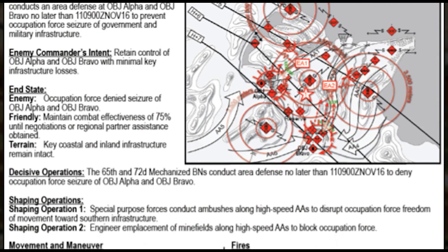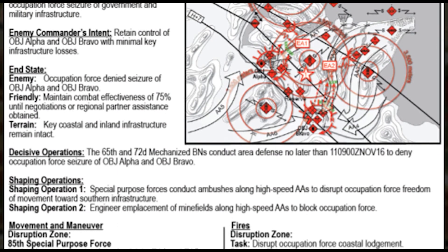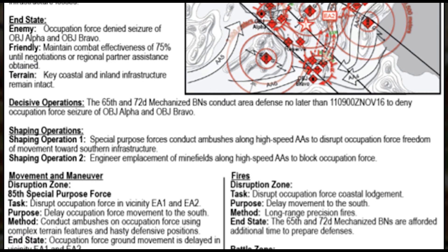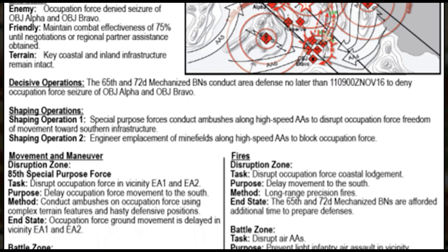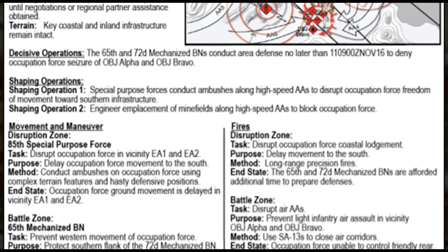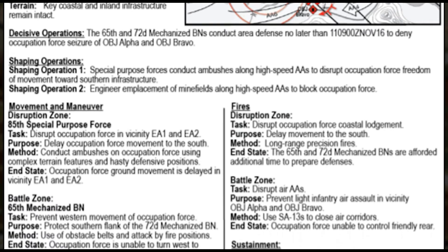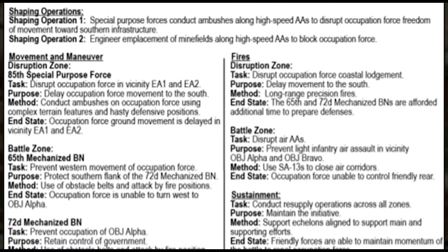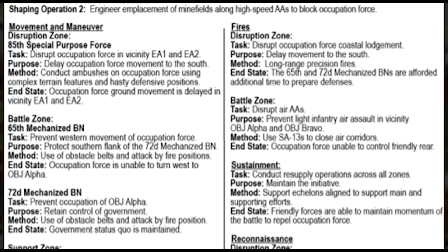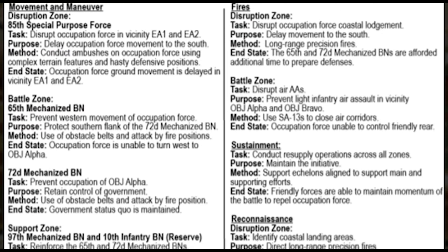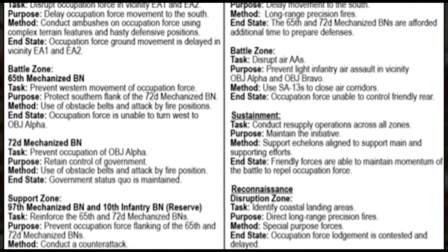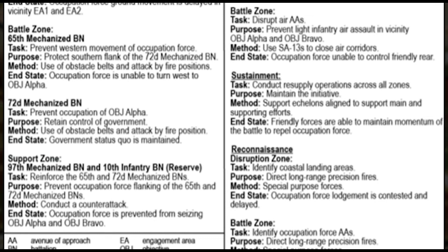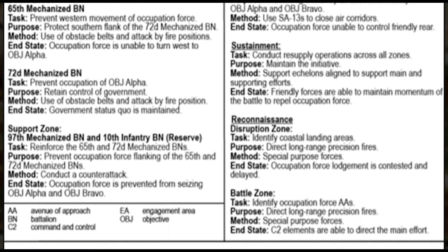Once the graphic situation template for the threat COA is developed, a supporting COA statement is drafted. The COA statement is a narrative that describes the situation template overlay. This statement at a minimum includes threat mission, threat commander's intent, desired end state, decisive and supporting operations, and a breakdown of task units by warfighting function or task function — including task within zone, disruption, battle, or support activities — identifying through time and space how the threat will act to meet its commander's desired end state.